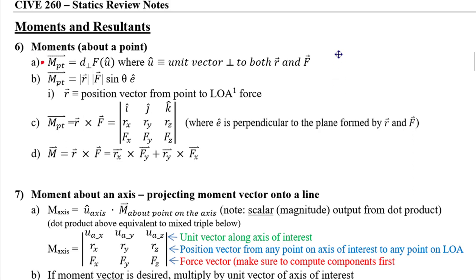We also have a scalar formulation: the length of r times the length of F times the sine of the angle between them, times the unit vector perpendicular to both. Finding that perpendicular unit vector is challenging for 3D problems. Then we have the full vector determinant. If you struggle with the right-hand rule, the determinant is a good friend — you can input signs of your components and track cross products to validate moment direction. I recommend learning the slide-and-curl or three-finger right-hand rule technique.